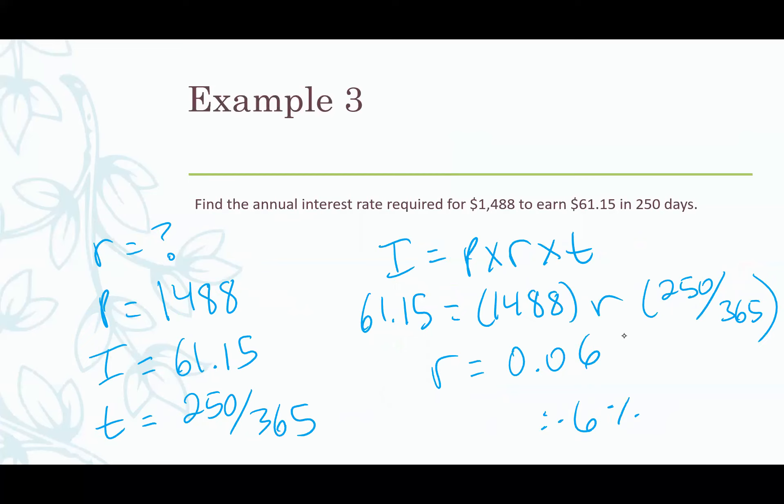Another example. Find the interest rate required for $1,488 to earn $61.15 in 250 days. So write down what we know, what we don't know. We're looking for the interest rate, so r is the unknown. The principal or the original amount of money is $1,488 and we want to earn $61.15 in interest, so that's our I. The time is 250 days. So we write this as 250/365 because that's how many days are in a year.